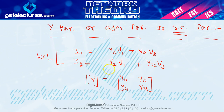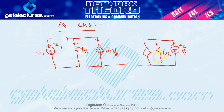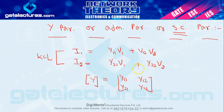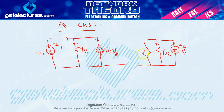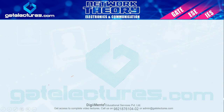Looking at the second equation: the first term Y22·V2 corresponds to admittance Y22 with voltage V2, and the second term Y21·V1 depends on V1 so it becomes a dependent current source Y21·V1. Now to understand how to calculate Y parameters, let us consider an example — a pi network.